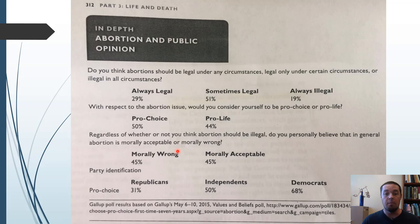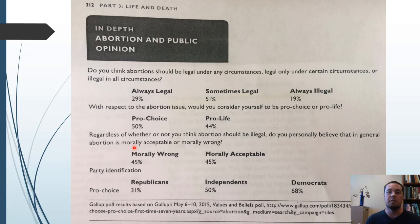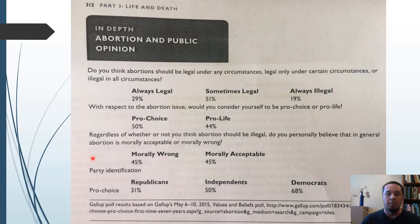When asked whether abortion is morally acceptable or morally wrong, the public is also evenly split. This raises an important distinction: the morality of abortion versus the legality of abortion. Just because something is morally wrong does not mean it should be illegal, and just because something is illegal doesn't mean it's morally wrong. For example, it's morally wrong to cheat on your spouse, but it's not illegal. It's illegal to run through a stop sign, but it may not be morally wrong if nobody is around. The morality can inform the legality, but they are distinct.